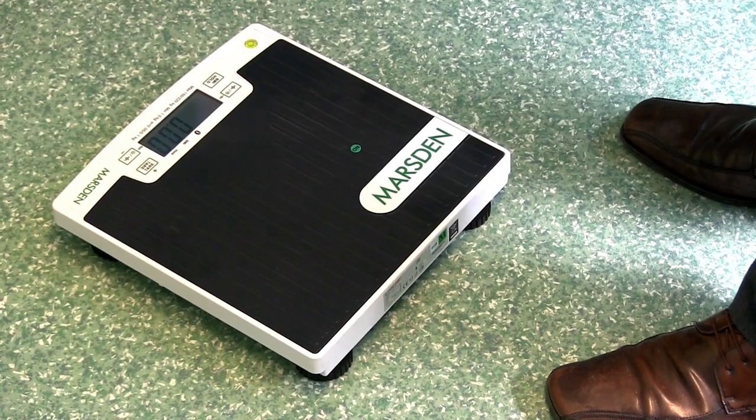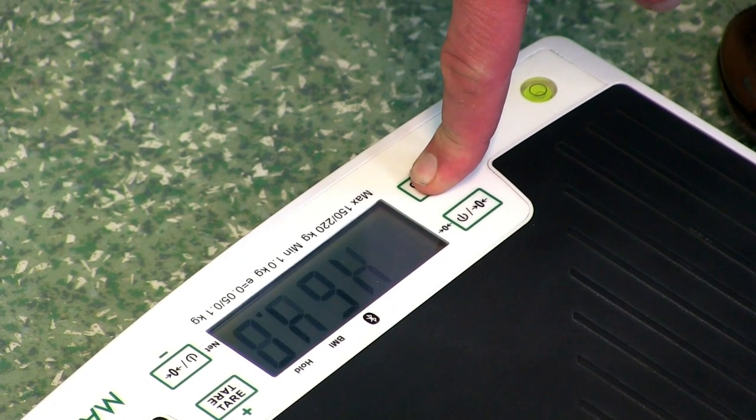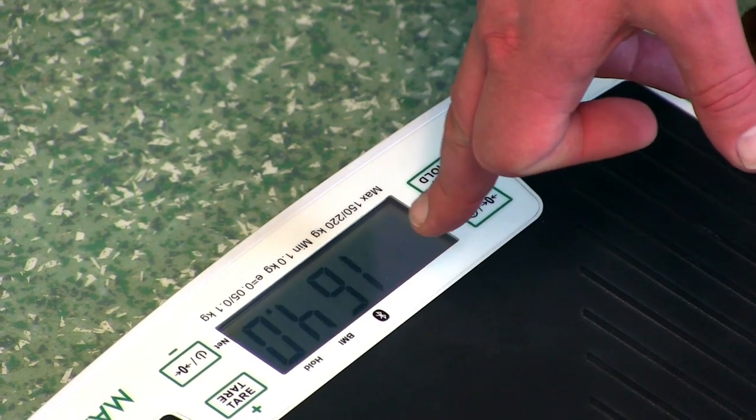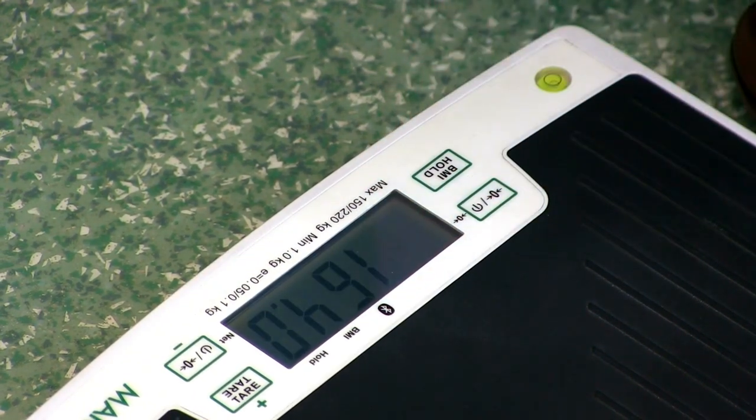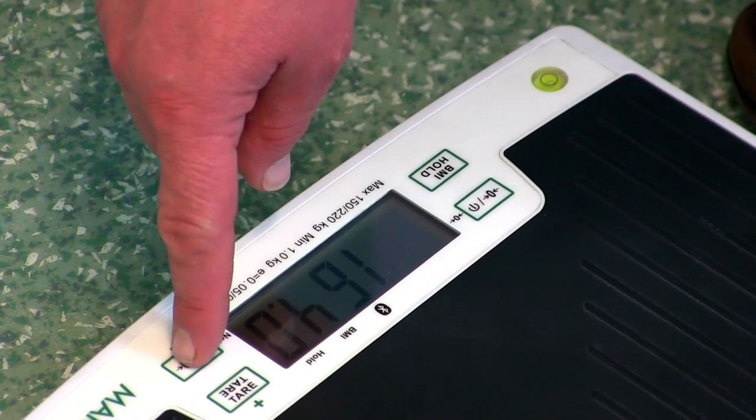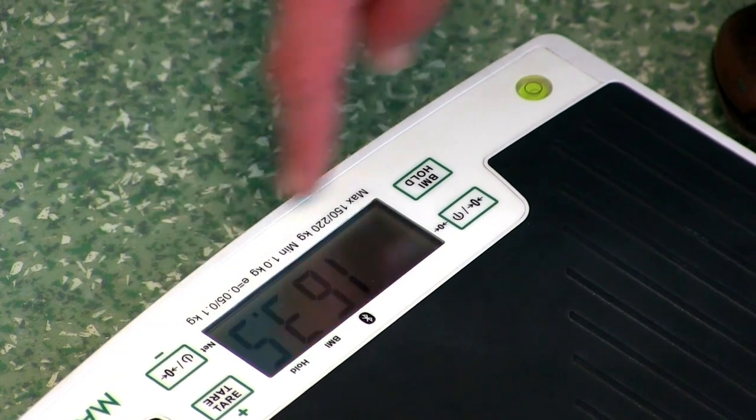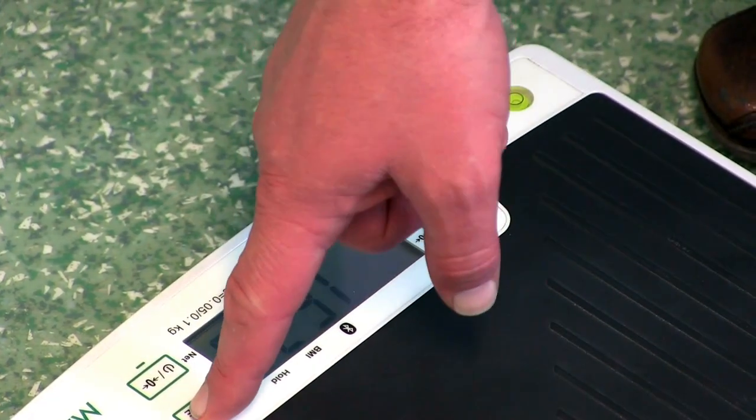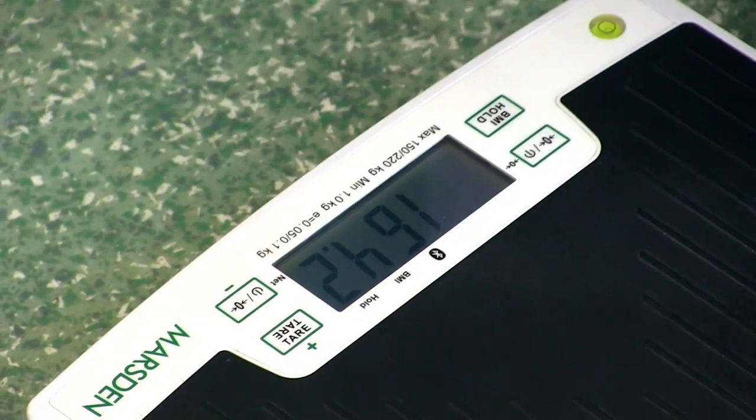The M420 also comes with a BMI function. To enable the function on the M420, press and hold down the BMI/hold button for around three seconds. You'll have flashing numbers on the indicator, and then simply adjust the height using the minus button and plus button until you have the patient's height correctly entered.